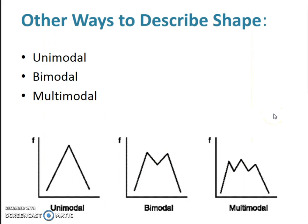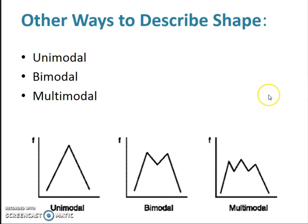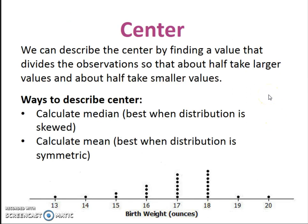A couple other ways you can describe your shape: unimodal, meaning there's only one mode — the number that appears most often. Bimodal means there are two numbers that appear most often; they don't have to be exactly equal in height — you look for peaks, where it kind of mountains up. Multimodal is self-explanatory. We will typically only be talking about unimodal and bimodal. So you can describe shape as symmetric, right skewed, or left skewed, and also whether it's unimodal or bimodal.